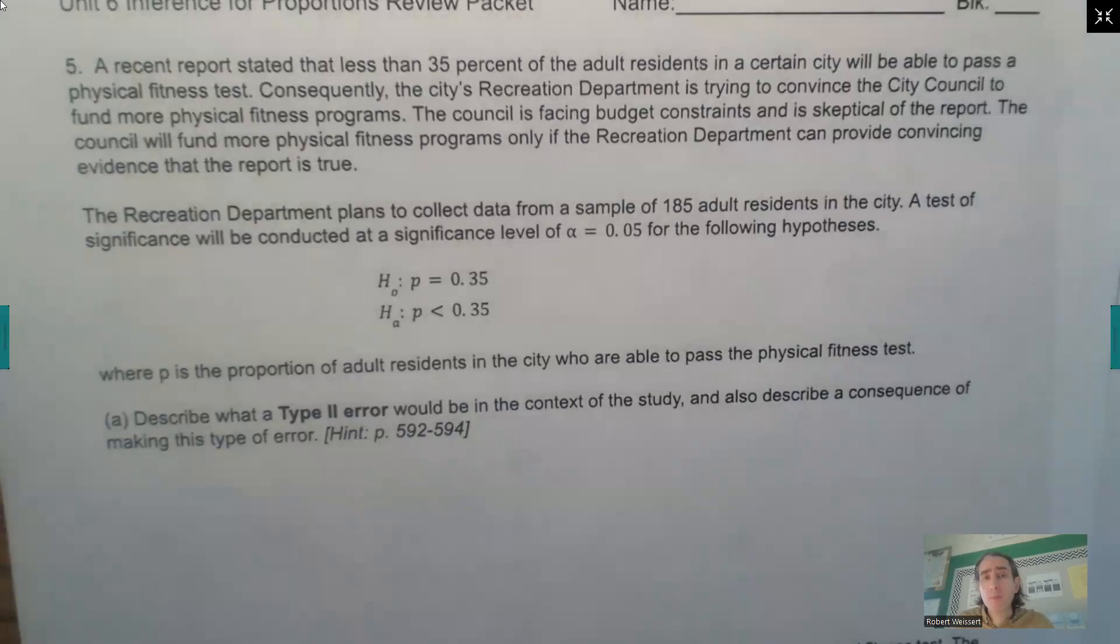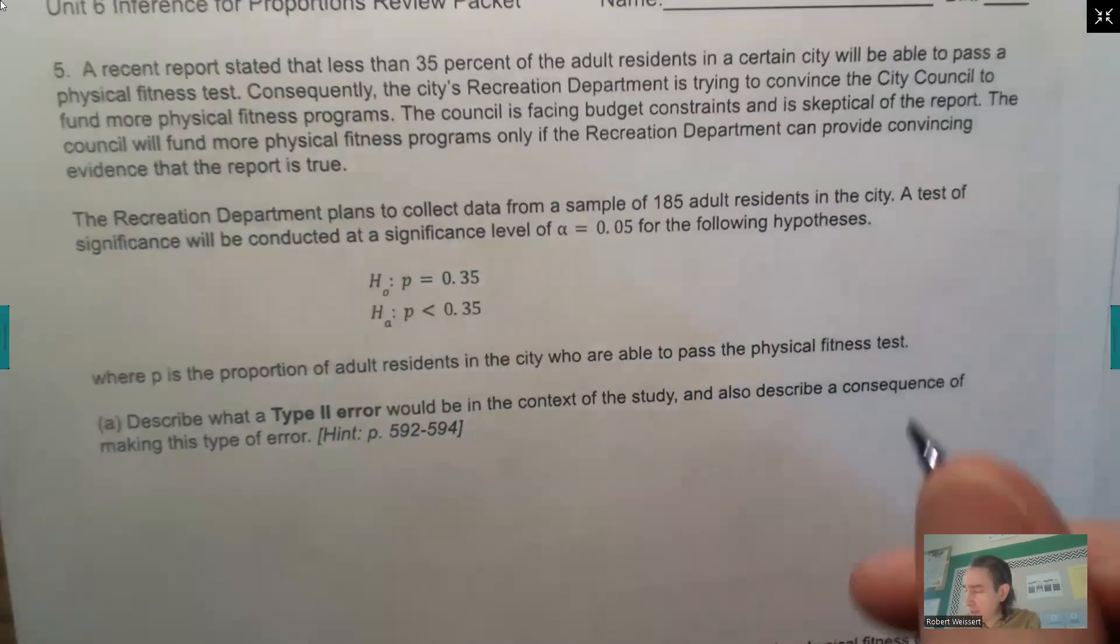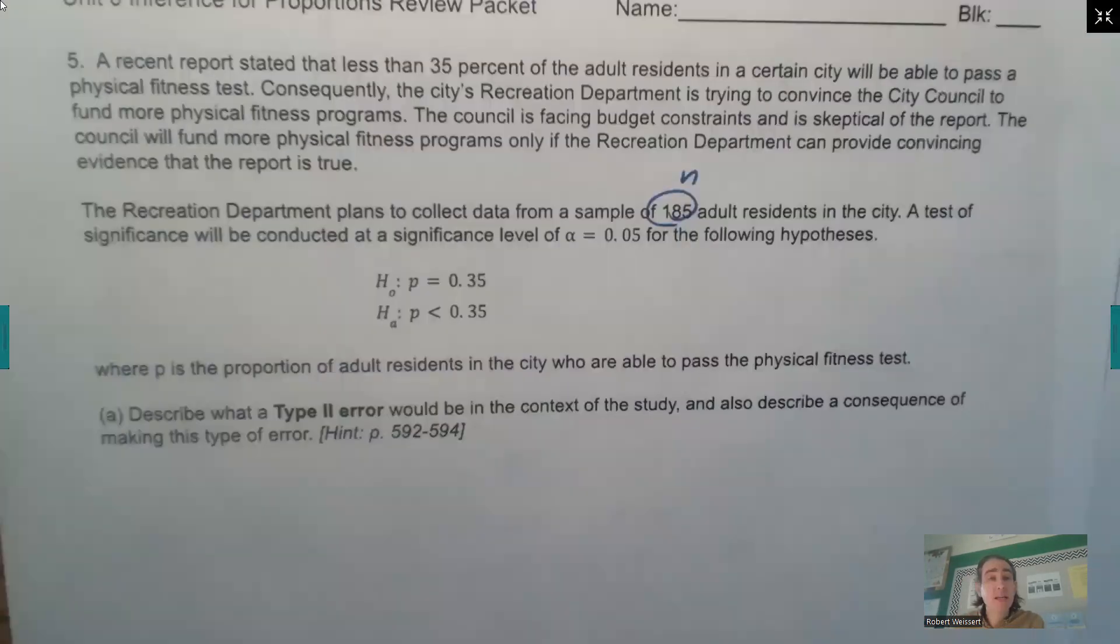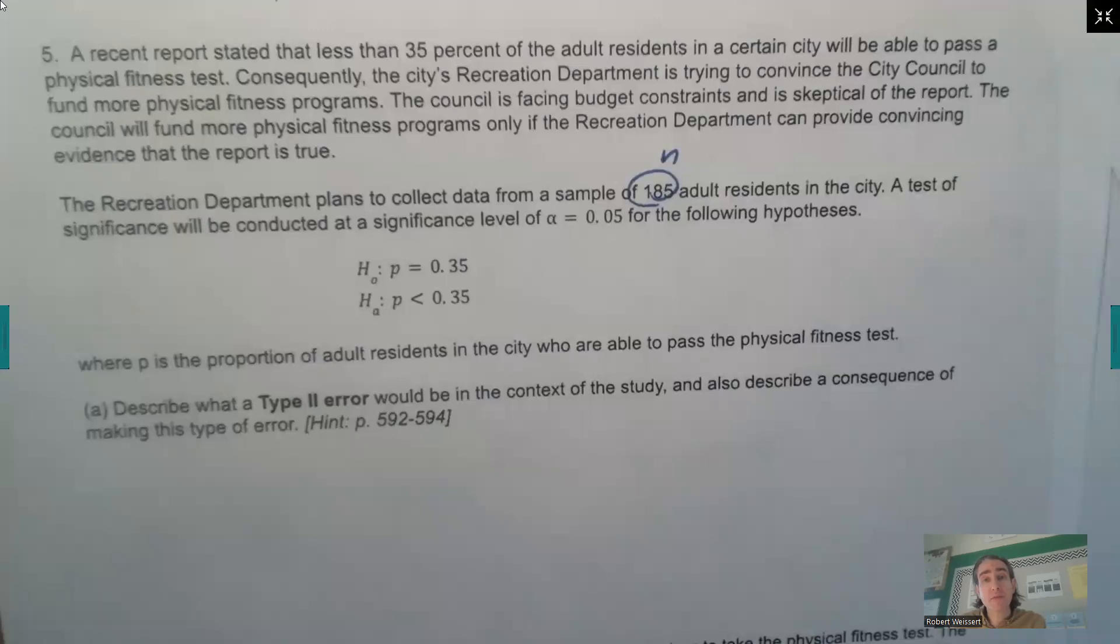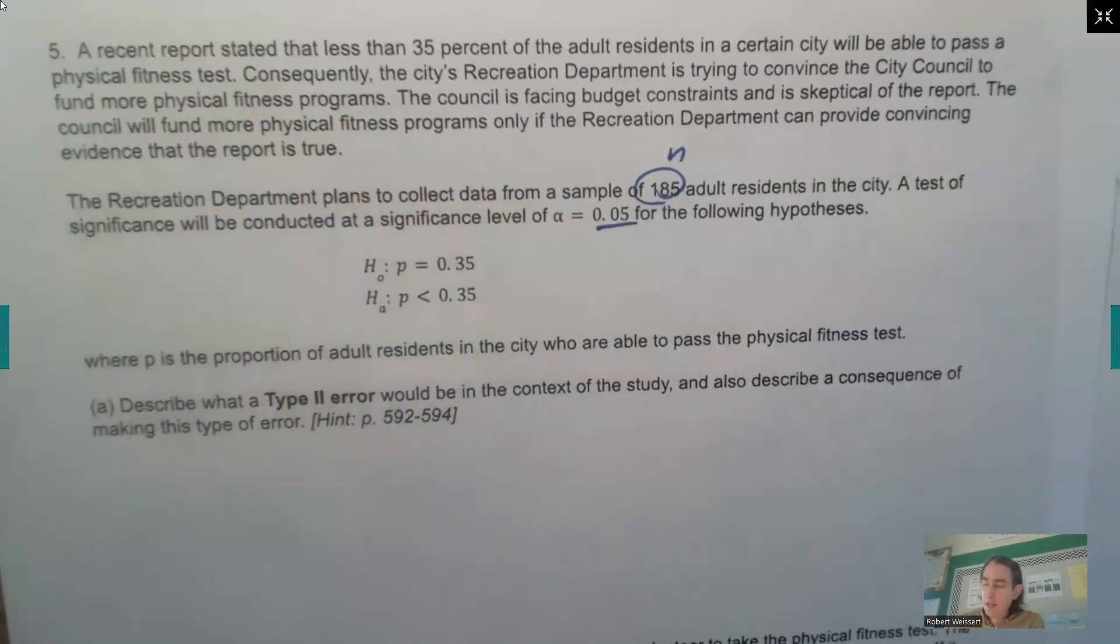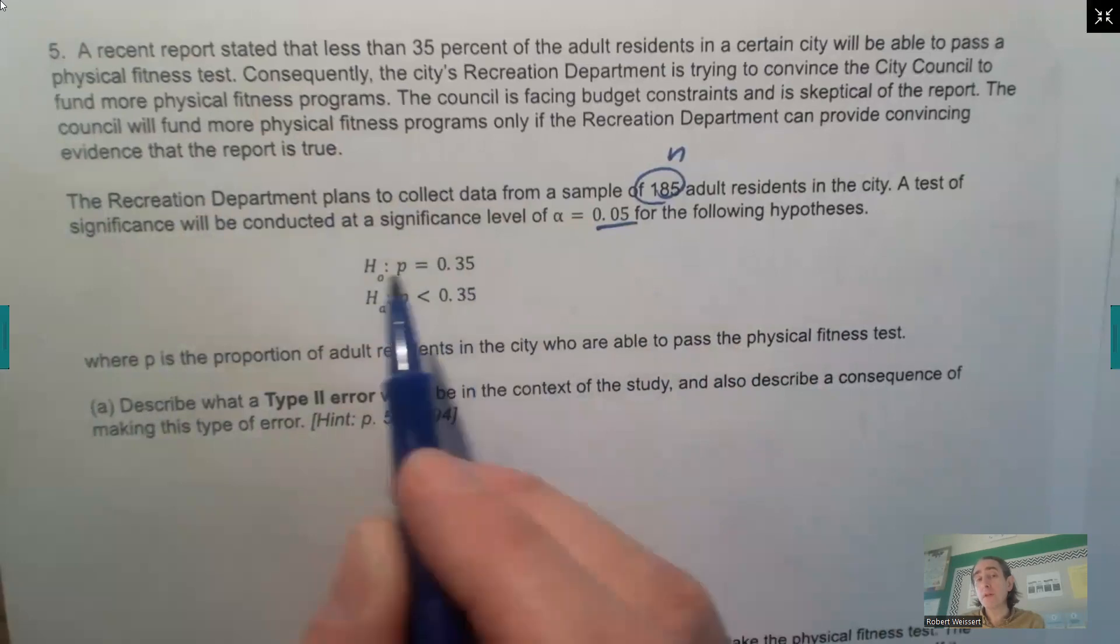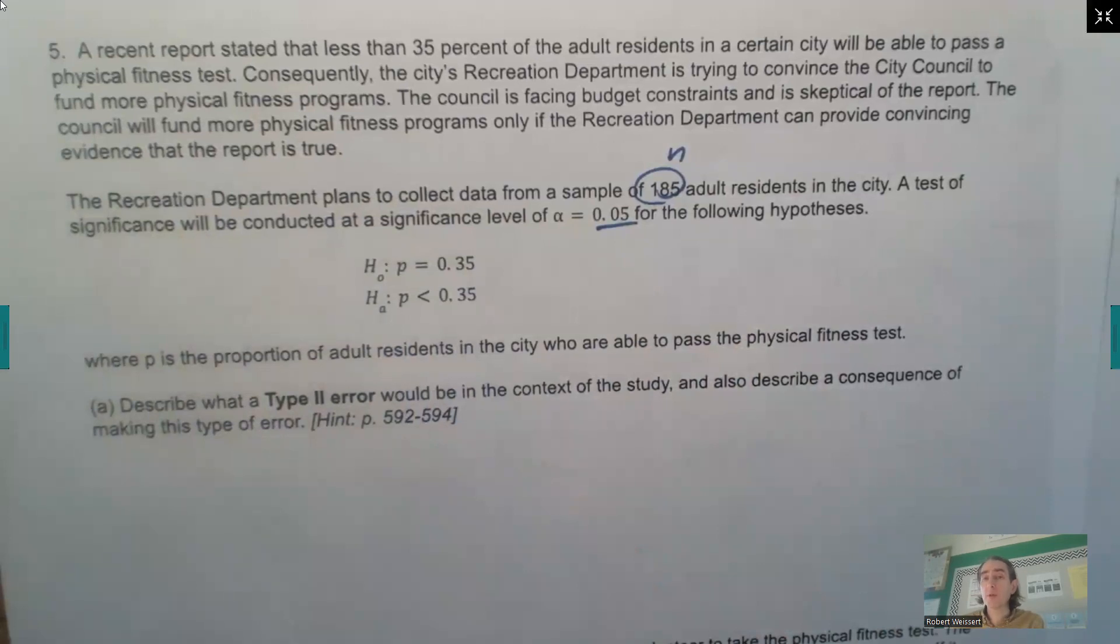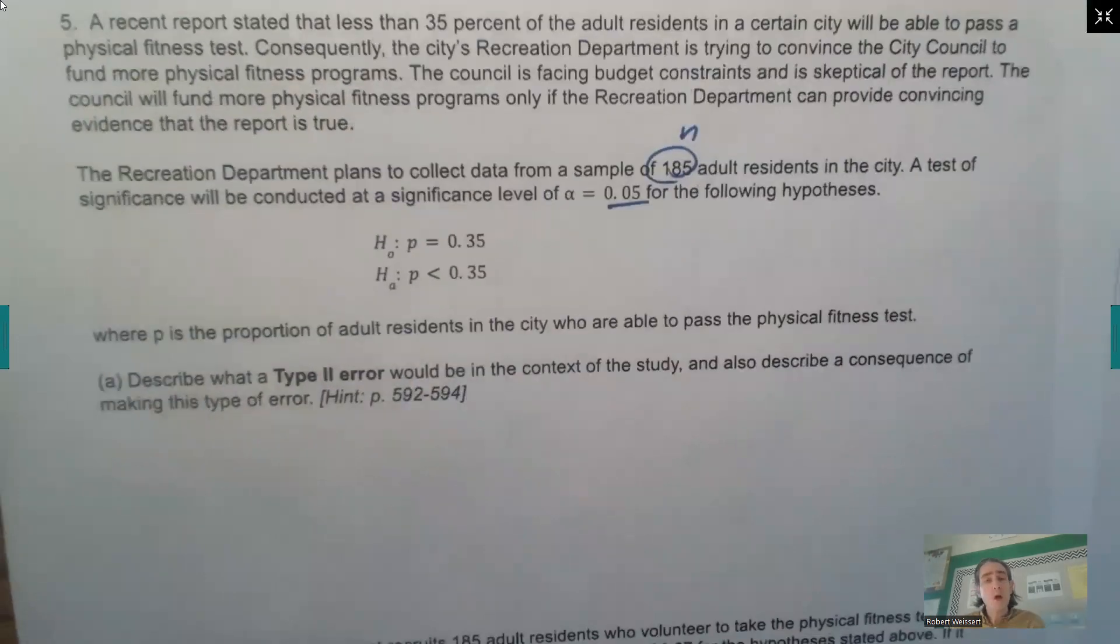The Recreation Department plans to collect data from a sample of 185 adult residents in the city. A test of significance will be conducted at a significance level of alpha equals 0.05, 5%. And here are your hypotheses. The null is that the true proportion is 35%, and for the alternative, the true proportion is less than 35%, where p is the proportion of adult residents in the city who are able to pass a physical fitness test.